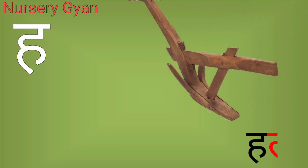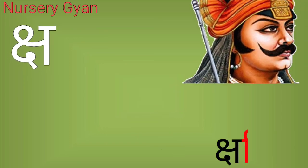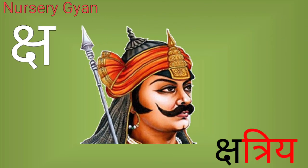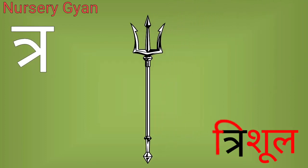ह — ह से हल। क्ष — क्ष से क्षत्रिय। त्र — त्र से त्रिशूल।